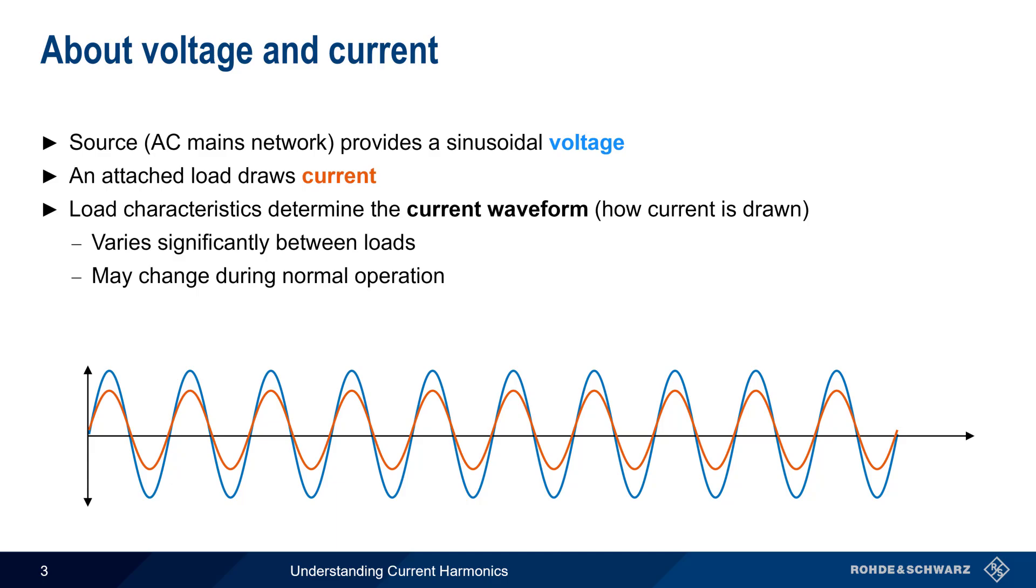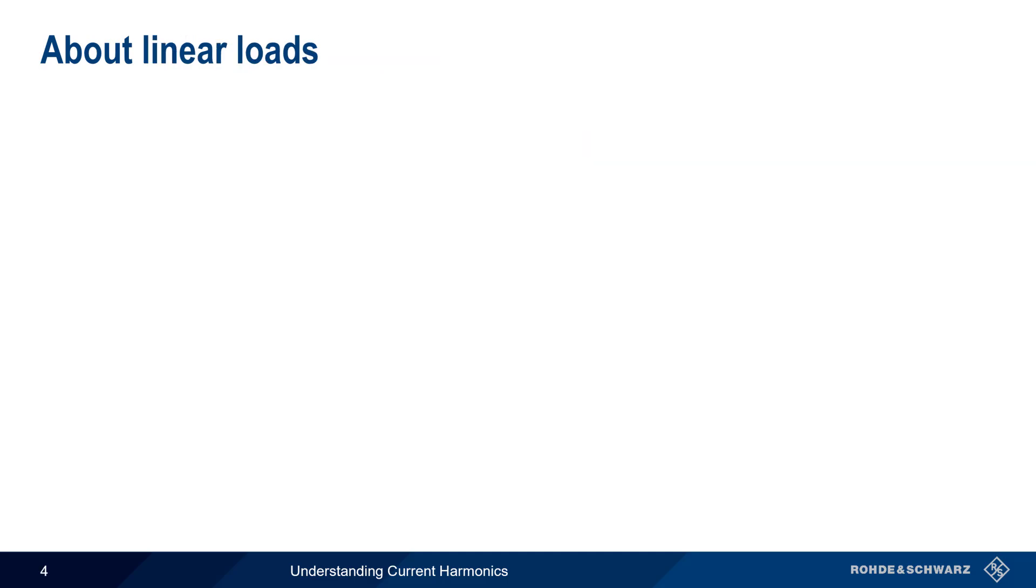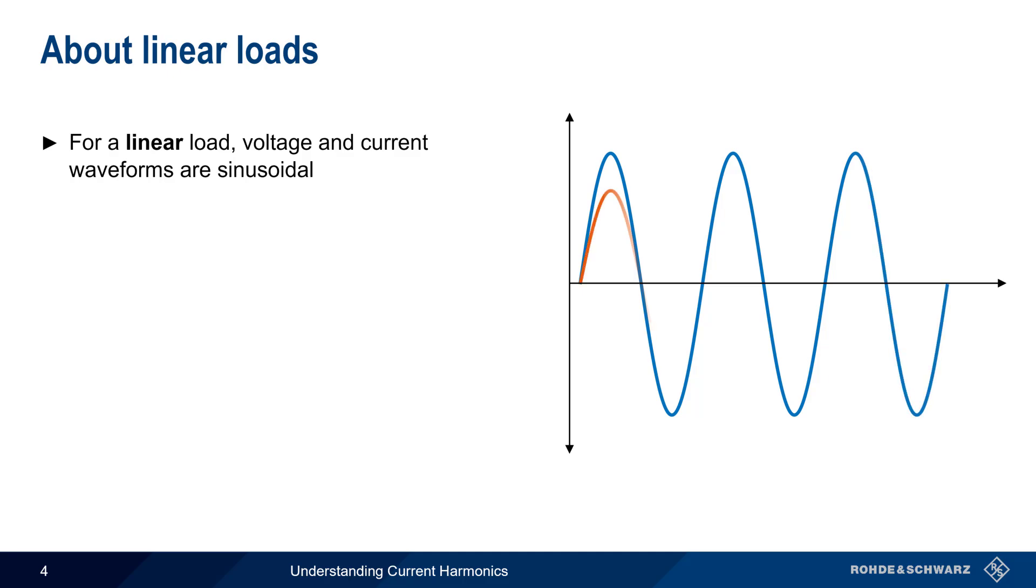In the ideal case, however, the current drawn by the load would have a sinusoidal waveform and would also be in phase with the voltage. This ideal situation, where the voltage and current are both sinusoidal, is created by a linear load.